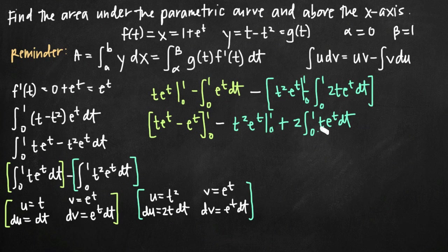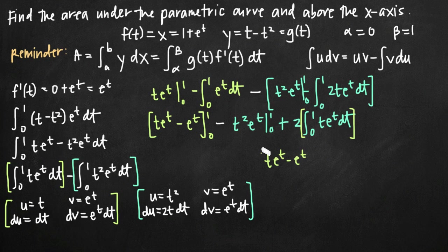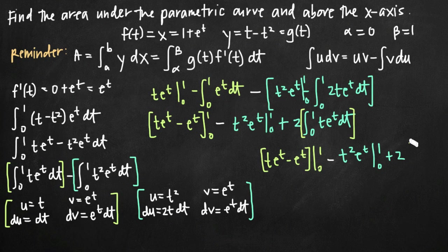Notice we have one integral remaining — the integral of t e to the t — which would need integration by parts, but we already evaluated it earlier. So we substitute that known result directly: 2 times t e to the t minus e to the t, evaluated on the interval 0 to 1. This gives us t e to the t minus e to the t minus t squared e to the t plus 2 times t e to the t minus e to the t, all evaluated on 0 to 1.